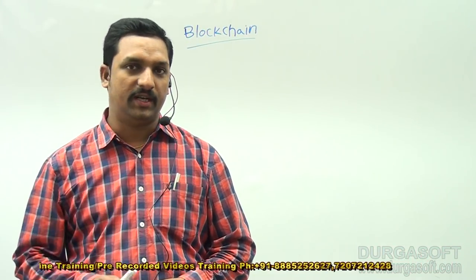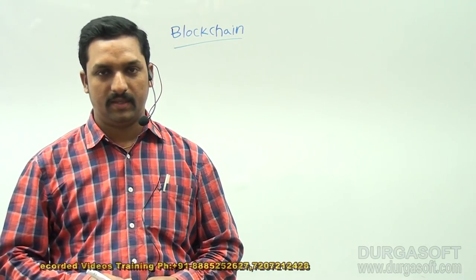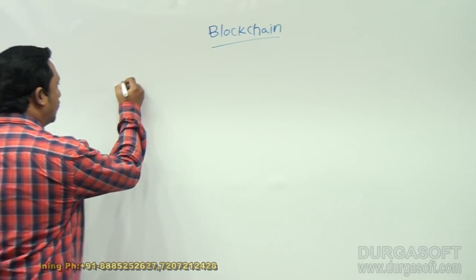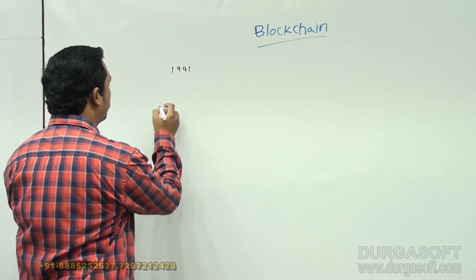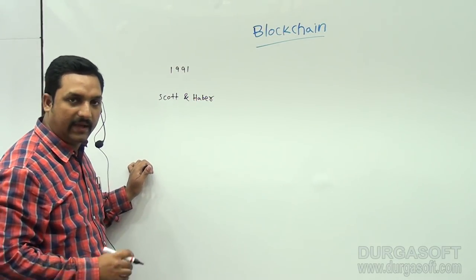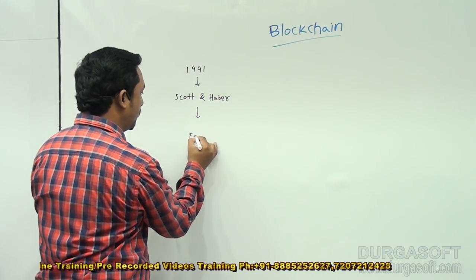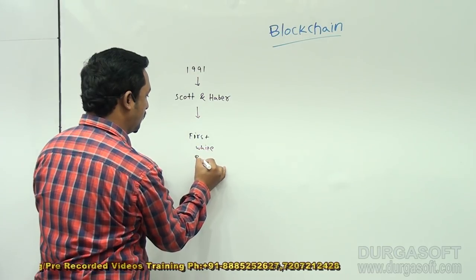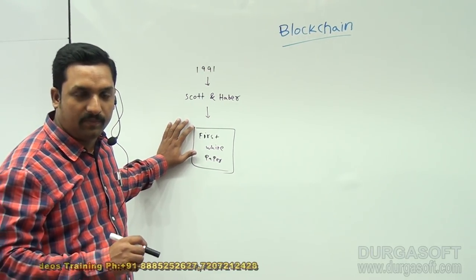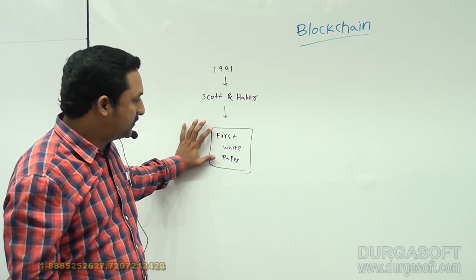In this lesson we are understanding what is blockchain and how it works. First, blockchain technology — is it a new technology or old technology? The answer is it is an old technology that recently became popular. In the year of 1991, two people — Scott and Haber — developed the first white paper on blockchain technology, explaining what blockchain is, its characteristics, how it works, and what the rules are.